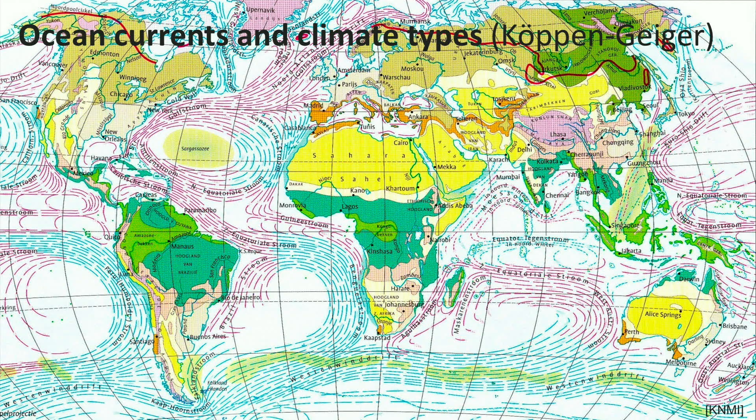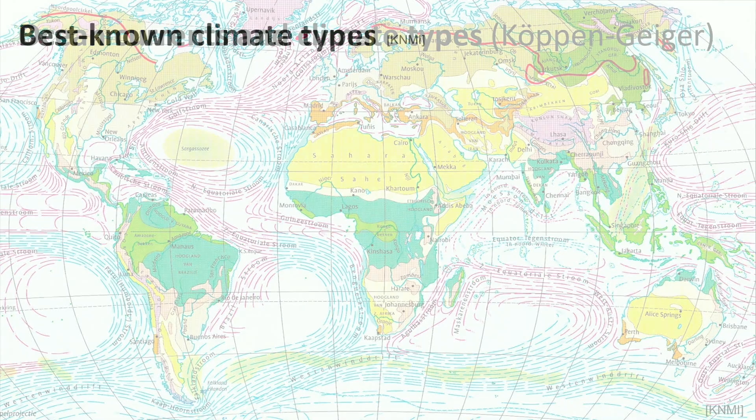Here you see different climate zones, as classified by Köppen and Geiger. Every color depicts a different climate. Let's have a look at the best known climate types.